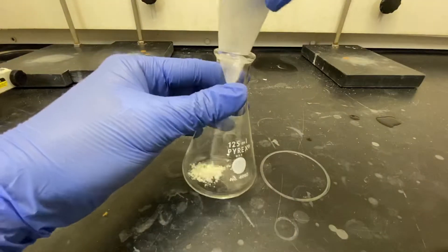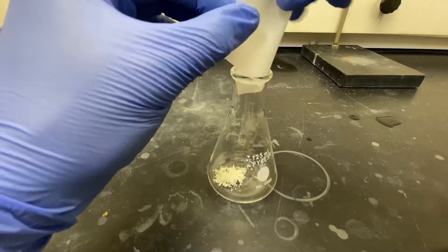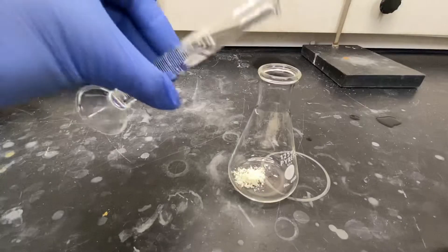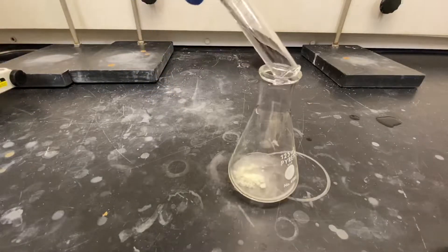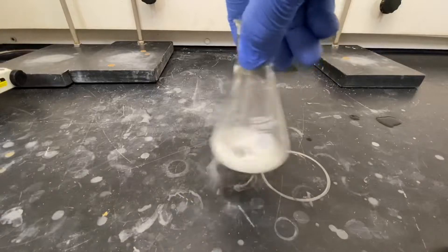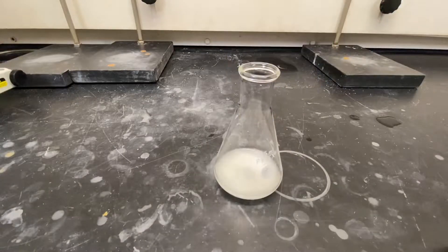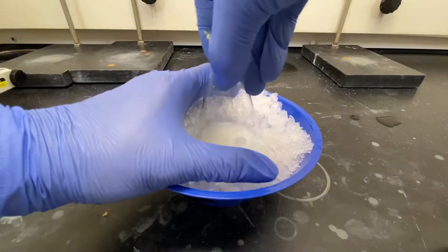Transfer the chalcone into an Erlenmeyer flask and add 14 milliliters of methanol. Swirl the mixture to suspend the chalcone, and then cool the mixture in an ice bath.